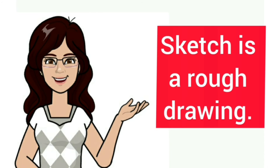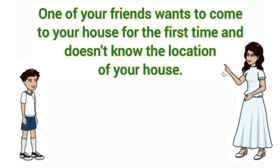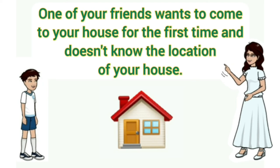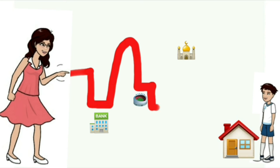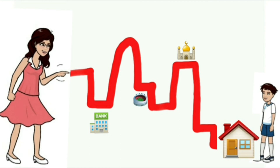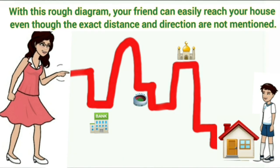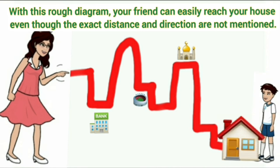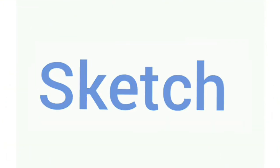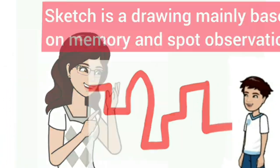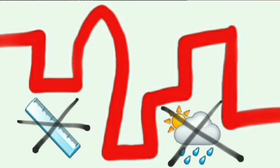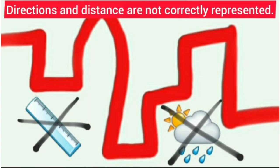To understand it better, assume that one of your friends wants to come to your house for the first time and doesn't know the location. You would draw a rough diagram of roads to show where to turn and which landmark to look out for in order to reach your home. Your friend can easily reach your house even though the exact distance and direction are not mentioned. A sketch is a drawing mainly based on memory and spot observation — drawn without a scale and without any conventional symbols. Directions and distance are not correctly represented, and detailed features are not shown.